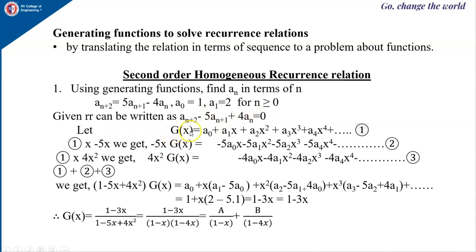Let the general generating function be g(x) = a_0 + a_1·x + a_2·x² + ... — equation 1. Multiply equation 1 by −5x (coefficient of the immediate lower order term): −5x·g(x) = −5a_0·x − 5a_1·x² + ... — equation 2. Then multiply equation 1 by 4x² (coefficient of the next lower term): 4x²·g(x) = 4a_0·x² + 4a_1·x³ + ... — equation 3.